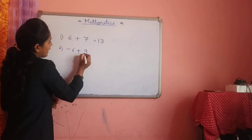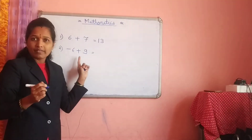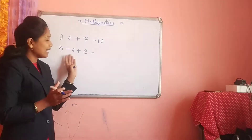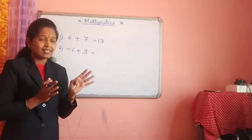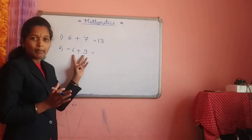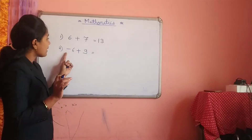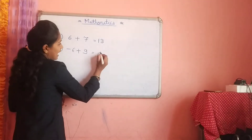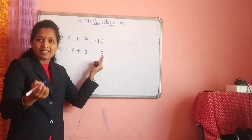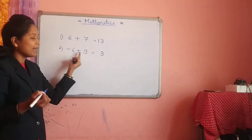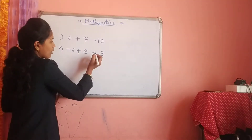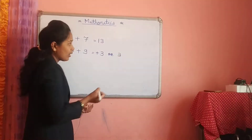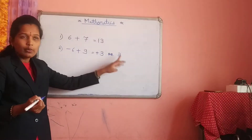The second example: minus 6 plus 9. One number is negative and another number is positive. We have learned the rule: when one number is negative and another is positive, we do the subtraction — 9 minus 6, the answer is 3. Now which sign do we give the answer? Pay attention to the biggest number. The biggest number is 9, and 9 has a positive sign, so the answer is also positive. You can write plus 3, or simply 3 — this is also positive 3.